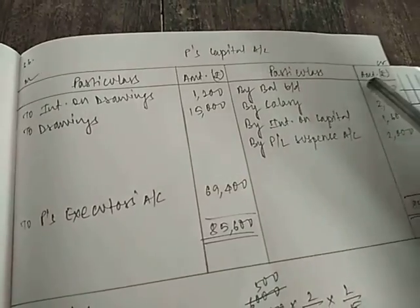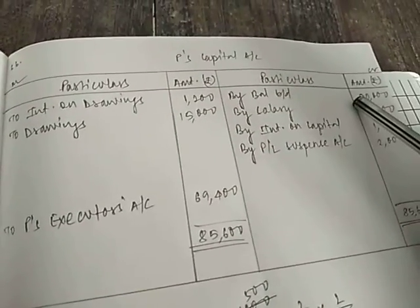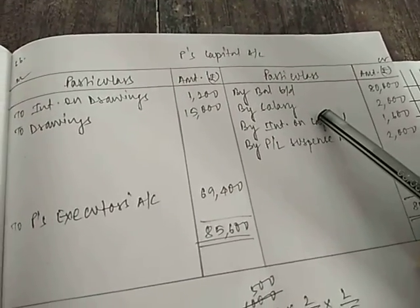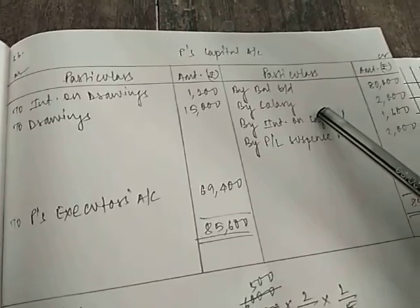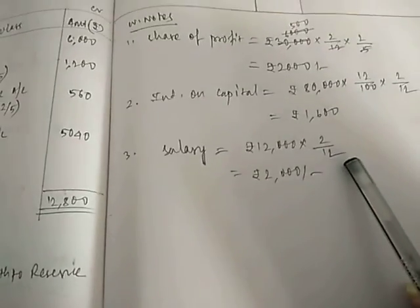So we will prepare P's capital account here. By balance P's 80,000 of capital. Salary was provided 12,000 per annum. Salary was 12,000 per annum, but since P had worked only 2 months, so 2 months salary only he will be getting, that is 2,000. So by salary 2,000 is provided.